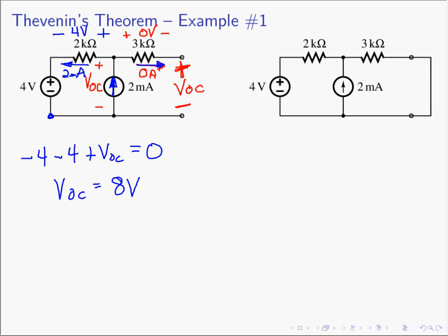So if we take R_L out and open it, the voltage VOC generated is 8 volts. Now we need to find ISC. We're going to take the load resistor R_L out, then short its location. I'm looking for the current ISC that flows through the short — that is the location where R_L was.